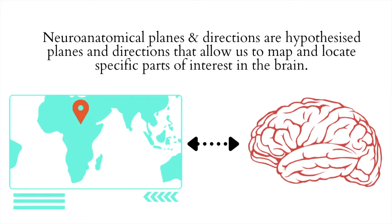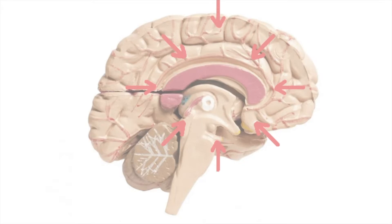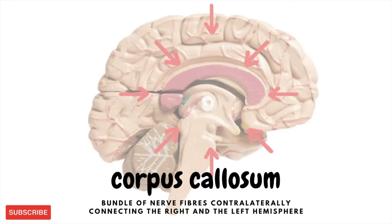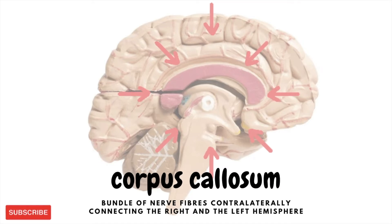Let's look at an example. This is the corpus callosum. The corpus callosum is essentially a bundle of nerve fibers that contralaterally connect the right and the left hemisphere in the brain. A sagittal dissection of the brain allows us to see the corpus callosum perfectly. So in this case, the neuroanatomical plane of sagittal dissection is what would be used in the fields of cognitive sciences as terminology to refer to the corpus callosum.